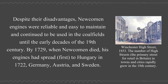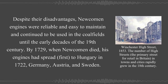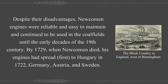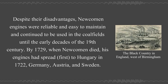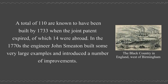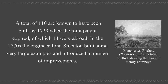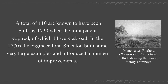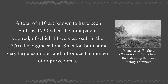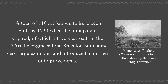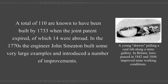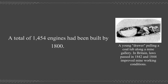By 1729, when Newcomen died, his engines had spread first to Hungary in 1722, then to Germany, Austria, and Sweden. A total of 110 are known to have been built by 1733 when the joint patent expired, of which 14 were abroad. In the 1770s, the engineer John Smeaton built some very large examples and introduced a number of improvements. A total of 1,454 engines had been built by 1800.